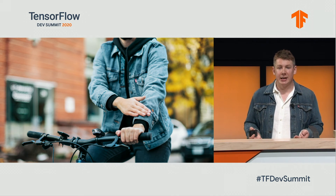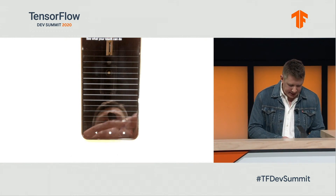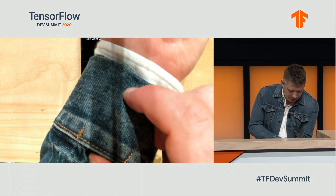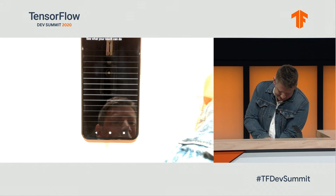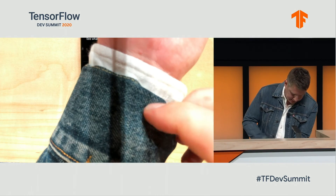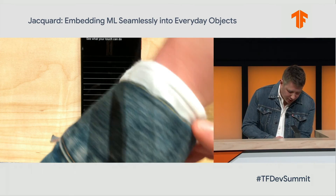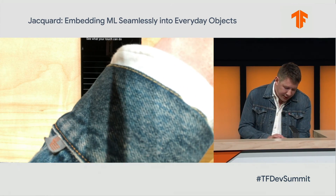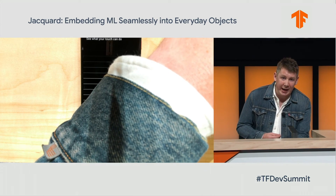A great example of this is the Levi's trucker jacket that I'm wearing. If we can switch over to the overhead camera — here I can take the Jacquard tag and add it to a specifically designed sensor module which is integrated into the jacket. What happens now is that this talks to an M0 processor that's running on the jacket itself, which is talking to some integrated sensor lines in the jacket.